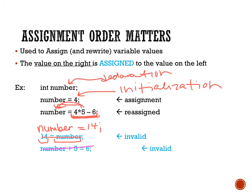You can't have anything else on the left along with the variable name. Instead, if you wanted to express that number plus 5 equals 6, you would rearrange it: number equals 6 minus 5, which gives number the value of 1. So remember, the variable always needs to be on the left by itself.